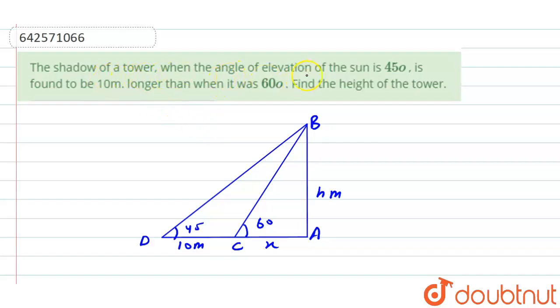The shadow outside of a tower when the angle of elevation of the sun is 45 degrees is found to be 10 meters longer than when it was 60 degrees.